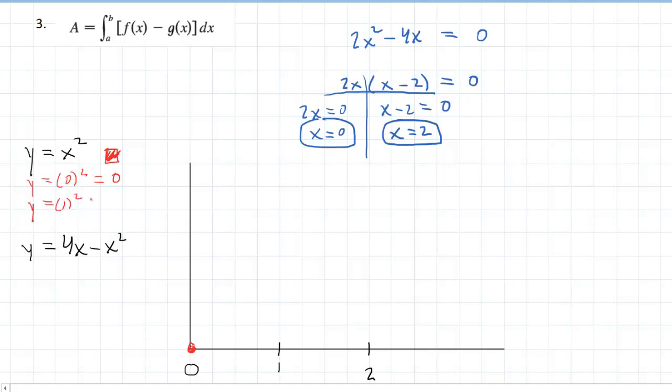So we would have the point 0 comma 0 here. I will then plug 1 in as well. So y equals 1 squared, which is 1. So when x equals 1, y also equals 1. Maybe we'll just count by two boxes here. So we'll have a point right there.